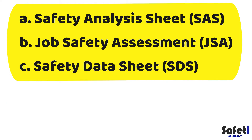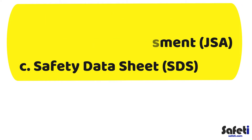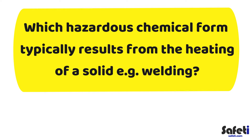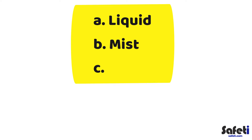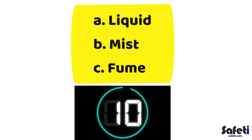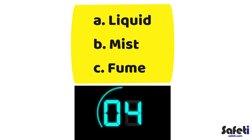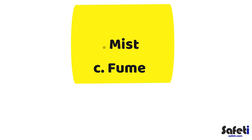The answer to question one was C — Safety Data Sheet, or SDS. Question two: which hazardous chemical form typically results from the heating of a solid, for example in welding? Is it A — a liquid, B — a mist, or C — a fume?